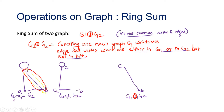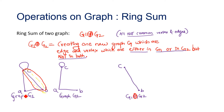The next operation is ring sum. When we perform ring sum on two graphs, we create one new graph which has edges present in either of the graphs but not in both. So we look for edges present in the first graph but not the second, or in the second but not the first — it is essentially union minus intersection. The ring sum is represented by a plus-encircled symbol.